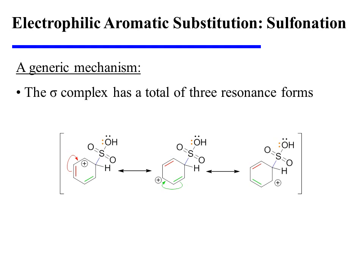The sigma complex has a total of three resonance forms. The red pi electrons can be shifted over one bond to delocalize the plus charge to a new location on the ring. And finally, the green pi electrons can also be shifted over one bond to delocalize the carbocation to yet one more unique ring position.